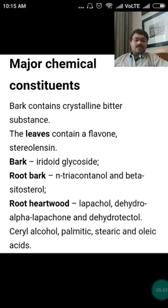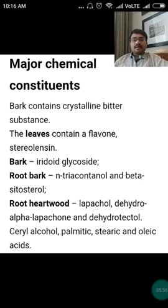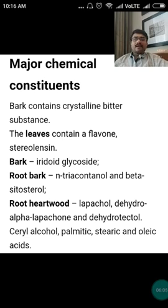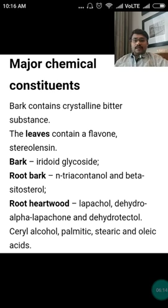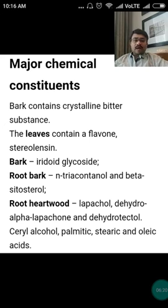The major chemical constituents include: bark contains a crystalline bitter substance; leaves contain a flavone known as Stereolensin; the bark has iridoid glycoside; root bark contains n-triacontanol and beta-sitosterol; the heartwood contains lapachol, dihydro-alpha-lapachone, and dihydrotectol; and serial alcohol, palmitic, stearic, and oleic acids are also present.